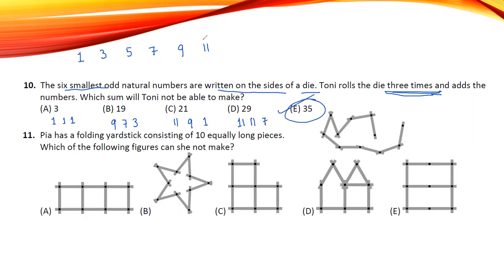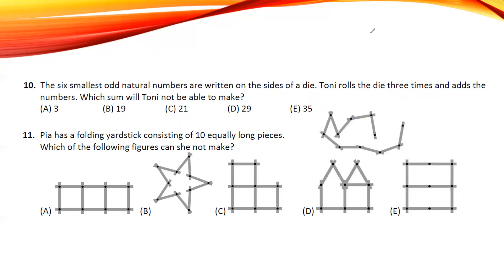Pia has a folding yardstick consisting of 10 equally long pieces: 1, 2, 3, 4, 5, 6, 7, 8, 9, 10. All pieces are of equal length. At the joints, some pieces can overlap but here they cannot. So option A will be the right answer.